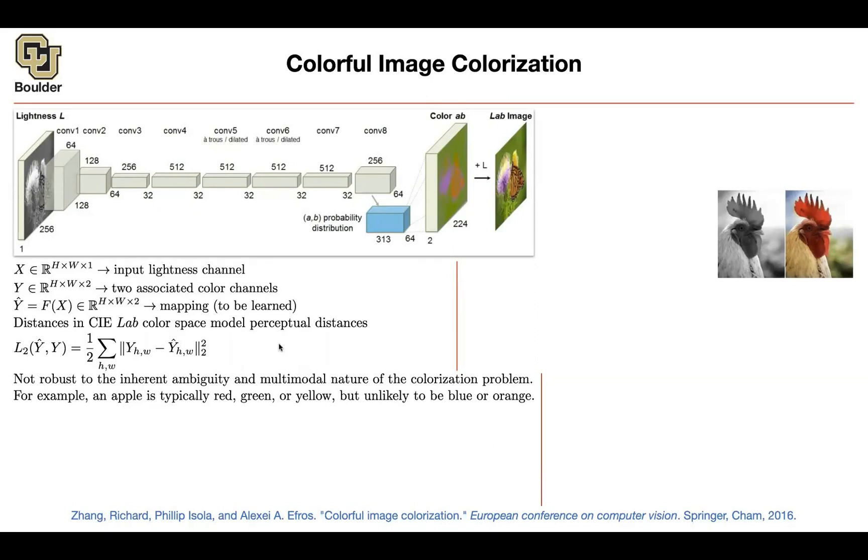You can quantize these values that you're predicting. How do you quantize it? The AB space is from negative 110 up until 110. These are the values that A and B are going to take. You can quantize it by a grid that has a grid size of 10.